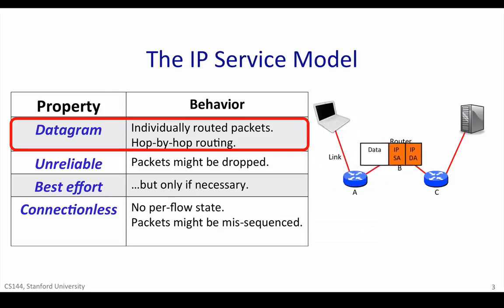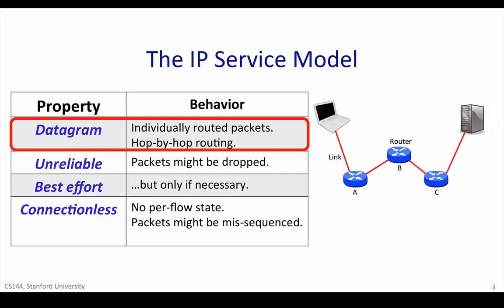Datagrams are routed hop-by-hop through the network from one router to the next, all the way from the IP source address to the IP destination address. Each router contains a forwarding table that tells it where to send packets next after it matches a given destination address. The router doesn't know the whole path. It simply uses the destination address to index into its own forwarding table, so that it can forward the packet to the next hop along the path towards its final destination. Hop-by-hop, step-by-step, the packet makes its way from the source to the destination, using only the destination address in the datagram.